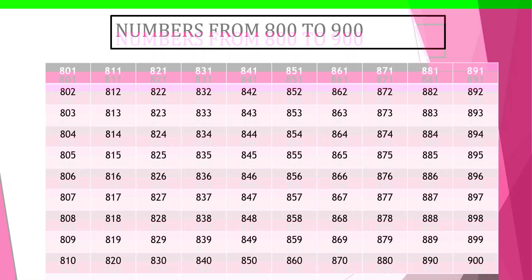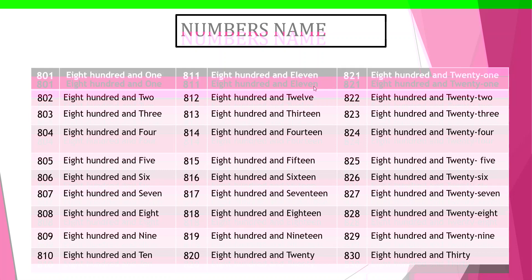This is the counting of numbers from 801 to 900. In this slide you can see the number names. What are the number names? You have to read the number names. Eight hundred and one: E-I-G-H-T, 8, H-U-N-D-R-E-D, 100, A-N-D, O-N-E, 1 means 801. Then: 802, 803, 804, 805, 806, 807, 808, 809, 810.